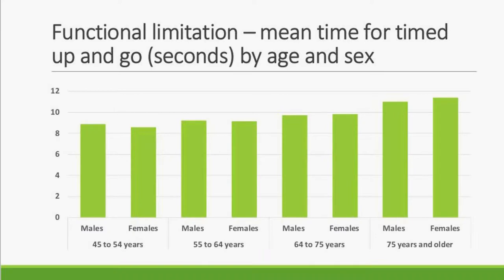For the timed up and go test, taking more time means lower performance. Again, there's not a huge difference between males and females, but there is clearly a dose response — as people get older, it takes them longer to get up, walk 3 meters, and return to the chair.